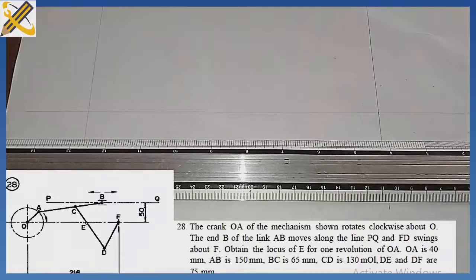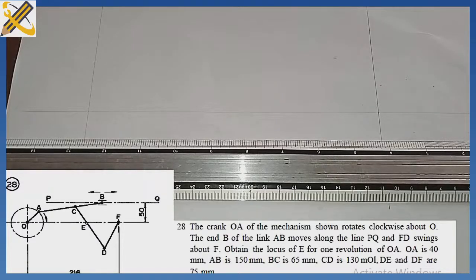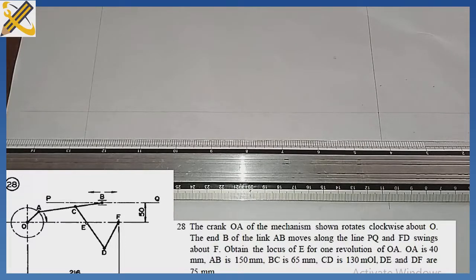To tackle the question on the screen: the crank OA of the mechanism rotates clockwise about O, the end B of the link AB moves along the line PQ, and FD swings about F. We are going to obtain the locus of E for one revolution of OA.